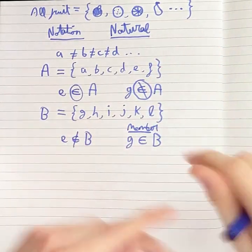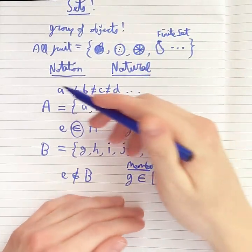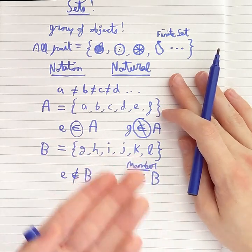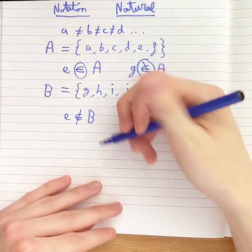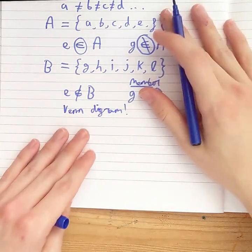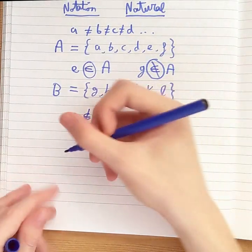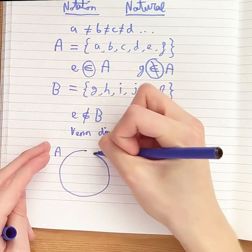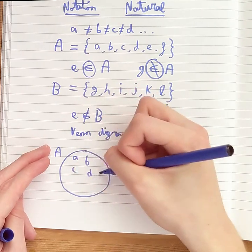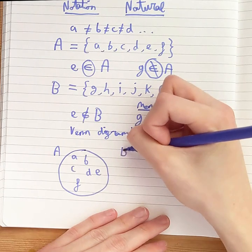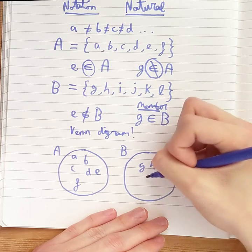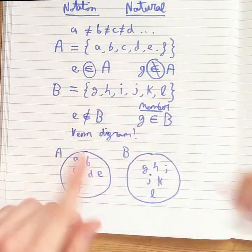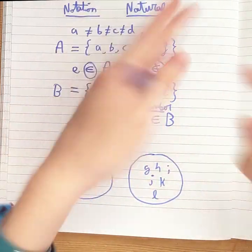Now we can draw a Venn diagram of these two sets. There are multiple ways to denote sets — one of these is called a Venn diagram. To draw it, we draw set A as a circle containing A, B, C, D, E, and F, and then we draw set B as another circle containing G, H, I, J, K, and L. As you can see, they happily live apart from each other with no intersection, as you often do see in a Venn diagram when the sets are completely different.